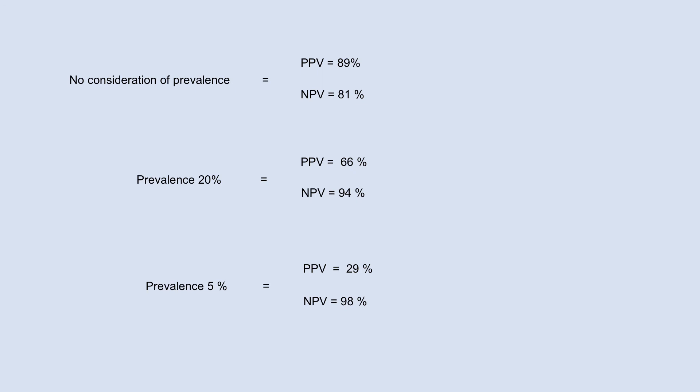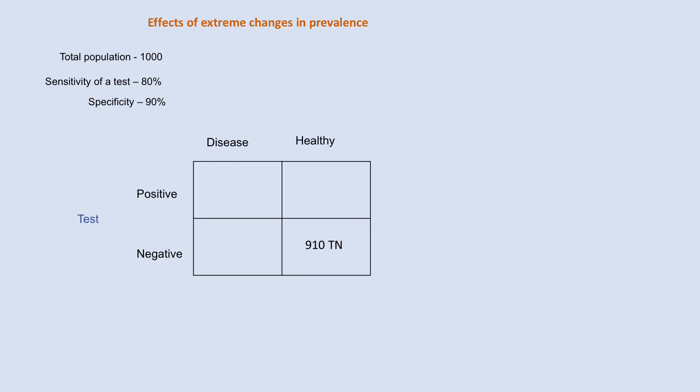In summary, when calculating predictive values we need to consider the effect of prevalence. Positive predictive value decreases with decreasing prevalence, while negative predictive value improves with decreasing prevalence. For an extreme example: if the disease does not exist in a population, all positive results will be false positives — so positive predictive value will be 0% while negative predictive value will be 100%. Extreme changes in prevalence can result in extreme changes in predictive values.